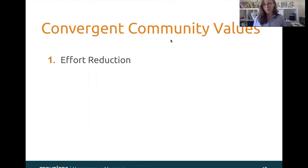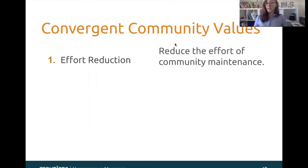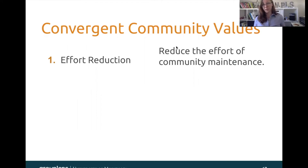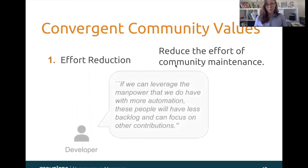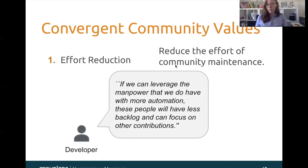Our first value, effort reduction, means that ORS and ORS-dependent systems should be reducing the effort of community maintenance. On Wikipedia, with so many edits coming in every single day, it takes a huge amount of work to make sure that those edits are high quality and meeting standards set by the community. People spend a lot of time doing this, which detracts from other things. As one developer said, if we can leverage the manpower that we do have with more automation, these people will have less backlog and can focus on other contributions.